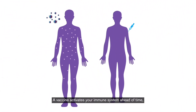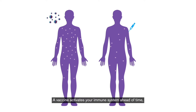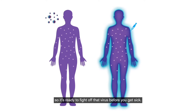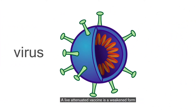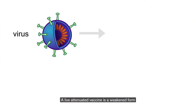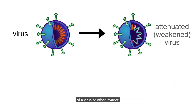A vaccine activates your immune system ahead of time, so it's ready to fight off that virus before you get sick. A live attenuated vaccine is a weakened form of a virus or other invader.